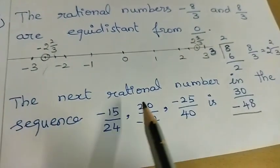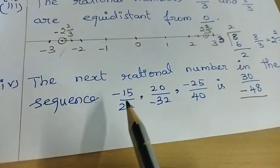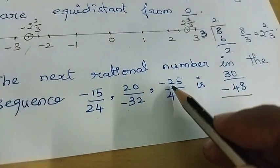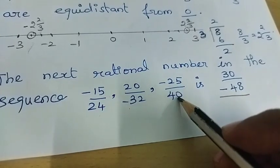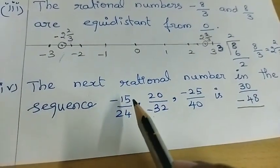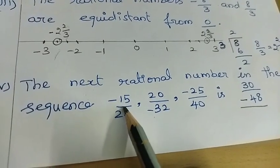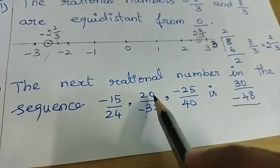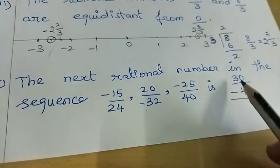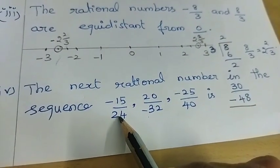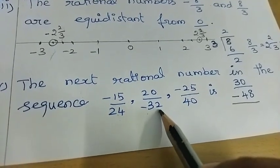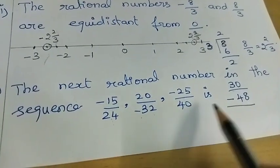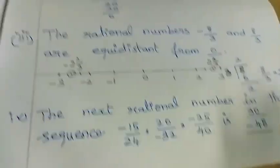Fourth one: The next rational number in the sequence — minus 15 by 24, minus 20 by 32, minus 25 by 40 is? The numerators are multiples of 5: 5 threes are 15, 5 fours are 20, 5 fives are 25, so next is 5 sixes = 30. The denominators are multiples of 8: 8 threes are 24, 8 fours are 32, 8 fives are 40, so next is 8 sixes = 48. The pattern alternates signs; next is minus 30 by 48.